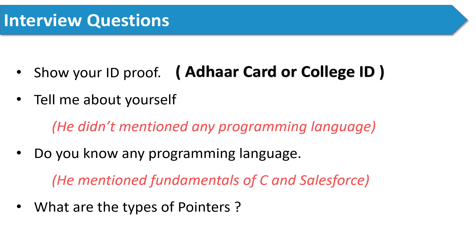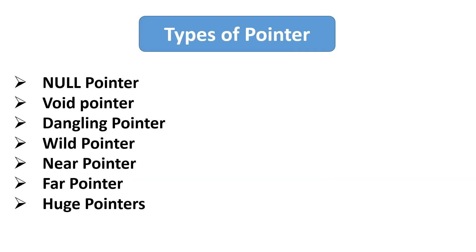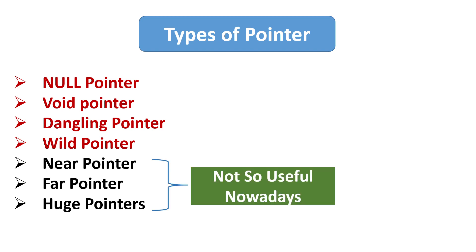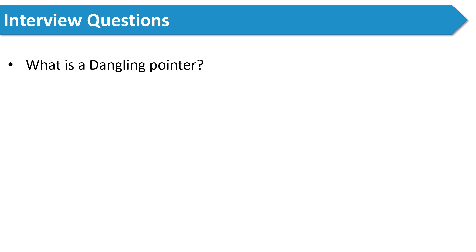The next question the interviewer asked was: what are the types of pointers? There are seven types of pointers — null pointer, void pointer, dangling pointer, wild pointer, near pointer, far pointer, and huge pointer. However, we majorly use four of them, as the last three are not very useful these days, so you can mention only those four in your interviews.